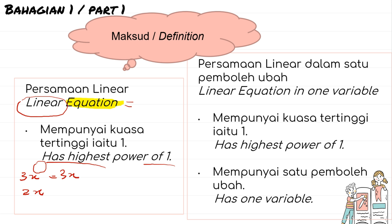But if you have x squared, the highest power is 2, hence it is not linear. Linear must have the power of 1. So a linear equation in one variable has two properties: the highest power of 1, and it has only one variable — whether it is x, y, or any letter.